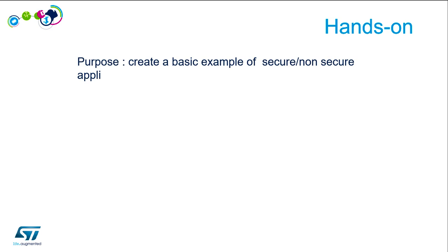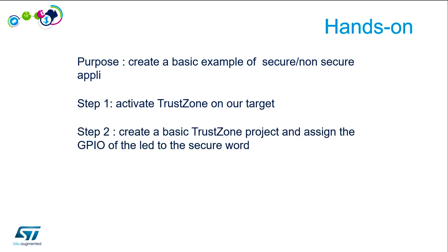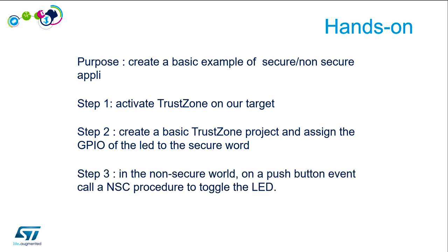TrustZone hands-on. We'll create a basic example of the secure and non-secure application. The first step is to activate TrustZone on our target and configure the address watermark. Then we'll create a basic TrustZone project and assign the GPIO of the LED to the secure world. In the non-secure world application, on a push-button event, we call a non-secure callable procedure to toggle the LED. The last step will be to deactivate TrustZone on our target.